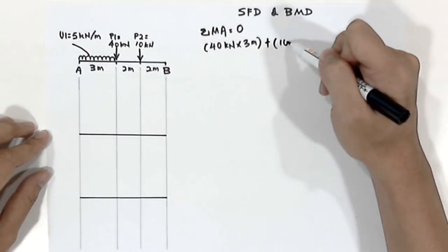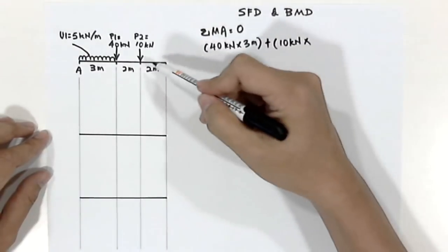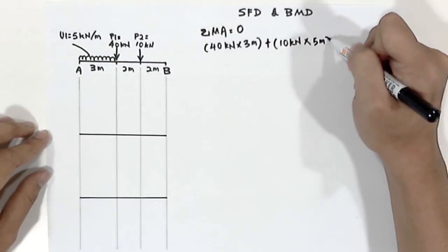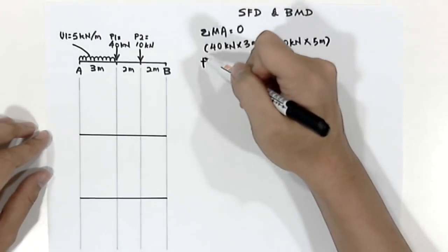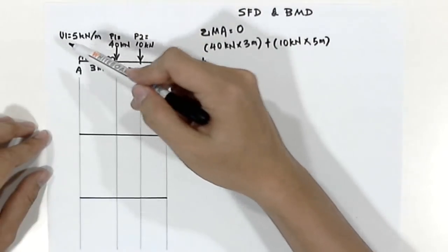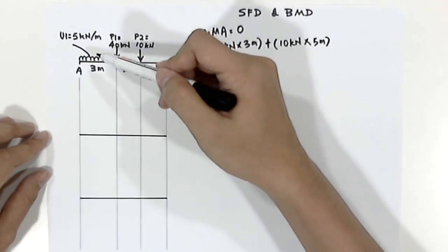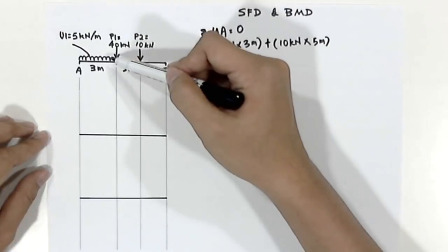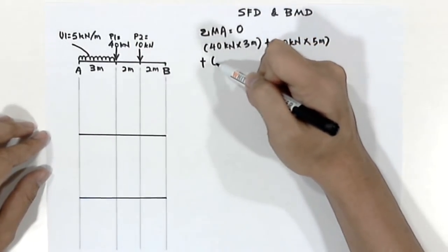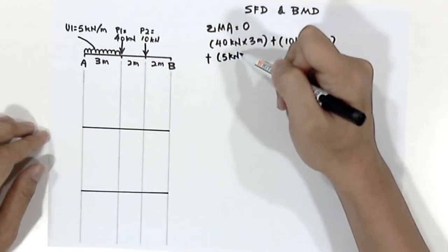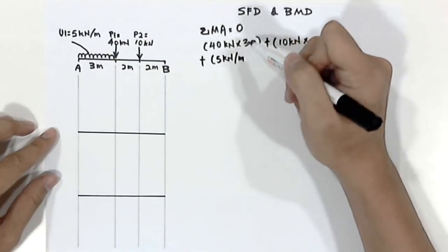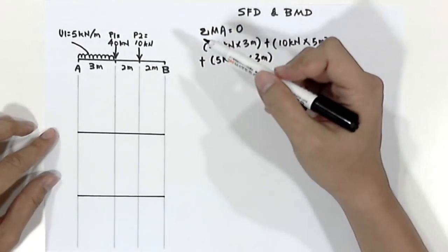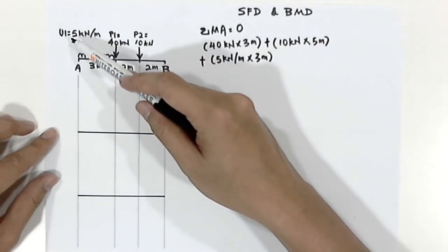P2 is 10 kN times the distance from point A, which is 5 meters. Last, we have to convert the uniform load U1 into a point load acting at the middle of the span of that particular uniform load. So 5 kN per meter times 3 meters — this is to get the total load coming from the uniform load U1.